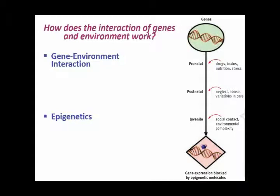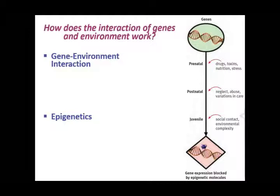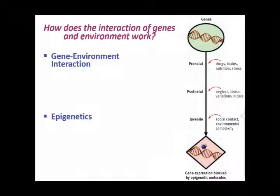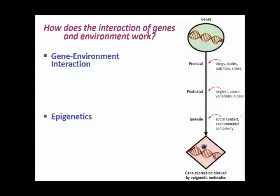Usually when we say neglect, we're talking about actual neglect where a baby is left to sit in their bouncy seat for hours and hours and nobody's talking to them or doing anything. Variations in care refers to instability in the child's upbringing — they can't really trust what's going to be happening. Those kinds of factors can influence the way their genes are expressed. During the juvenile period, social contact and environmental complexity can also influence how the genes are expressed.